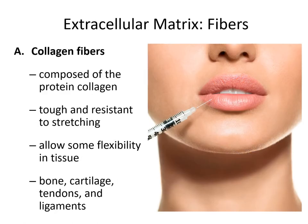Some connective tissues are essentially just really thick layers of extracellular matrix secreted by nearby cells. In the extracellular matrix we have our ground substance — composed of something that resists compression — and fibers. Going back to the analogy of concrete as our matrix and rebar as our fibers: the concrete resists compression, the rebar resists stretching and tension.